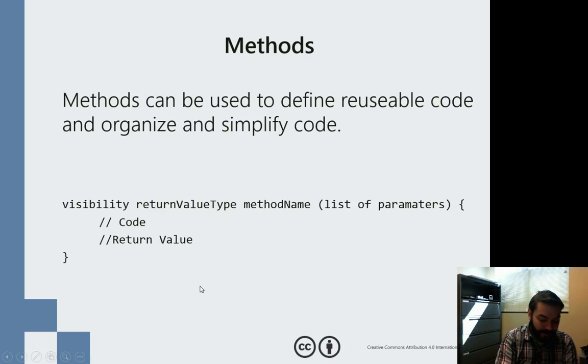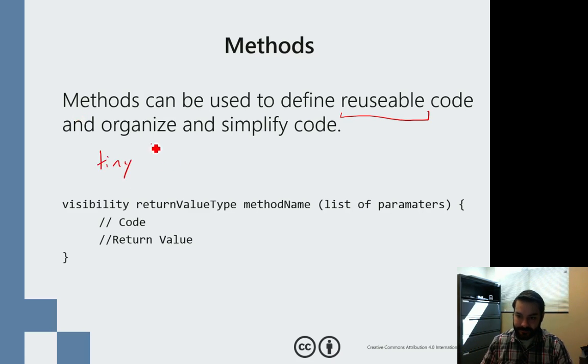Now, how a method operates is basically it takes anything that we were working on, any kind of code, and it makes it reusable. Instead of me having to copy and paste and make more variables, it takes it and it turns it into its own tiny little program.